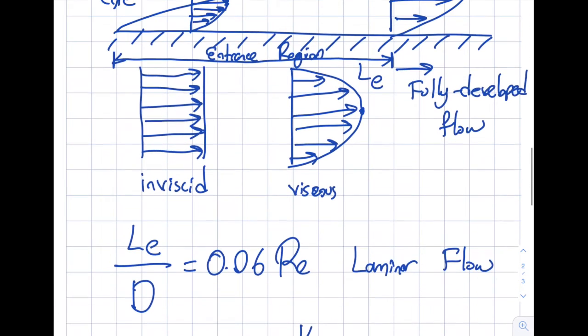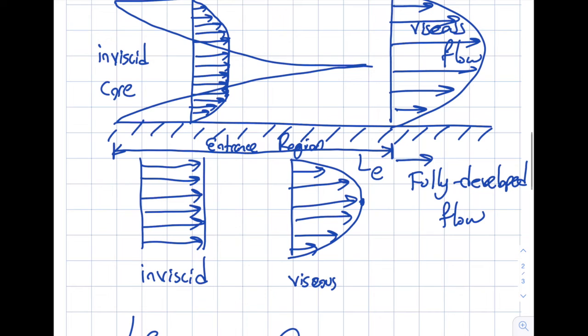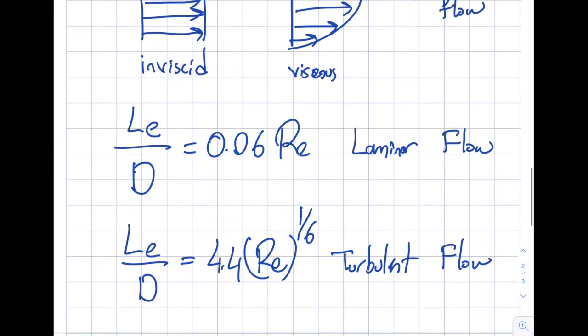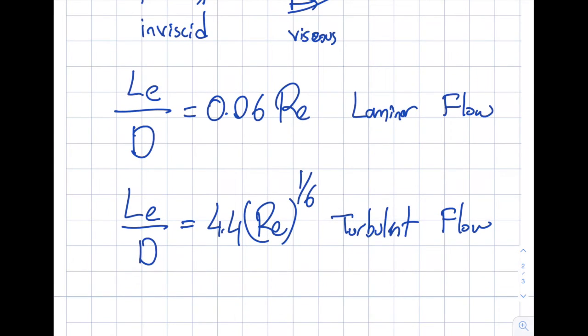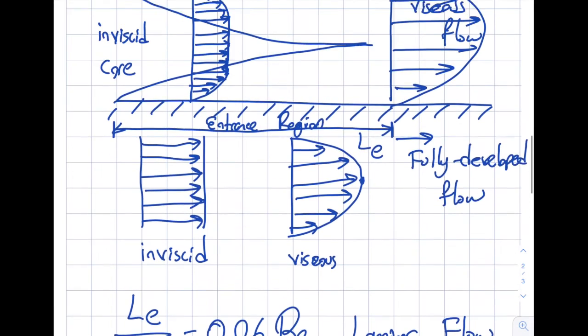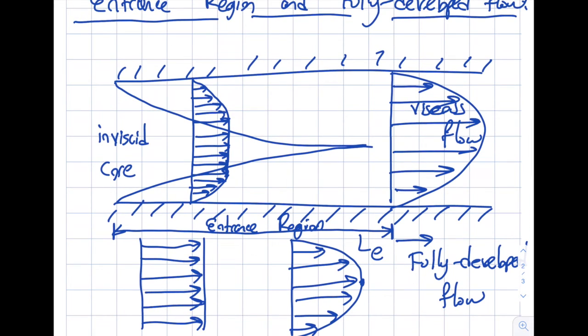Now you may ask me, when I'm doing an analysis should I really care about this entrance region? The answer is it really depends. Let's pick up the laminar and let's say that the maximum value is 2000. If I insert here 2000, you're going to see l_e will be equal to 2000 times 0.06 is 120d. So if my diameter is, I don't know, one centimeter, then it's going to be 1.2 meters.